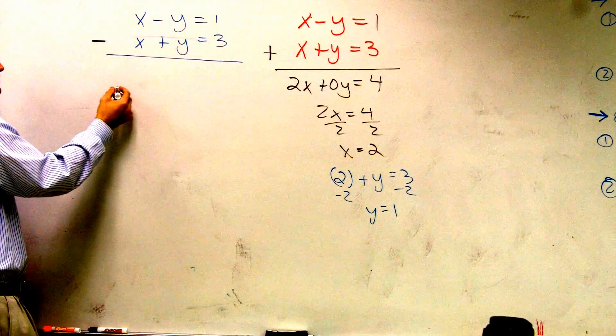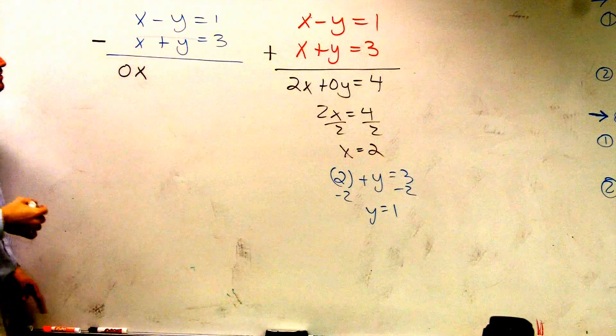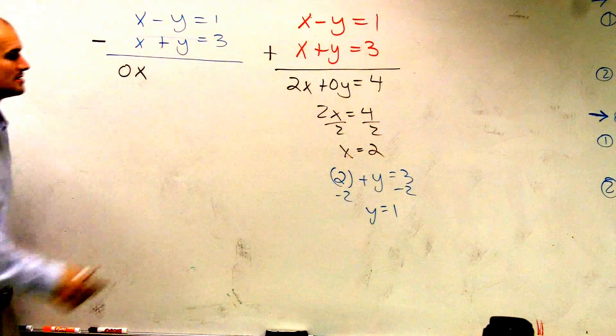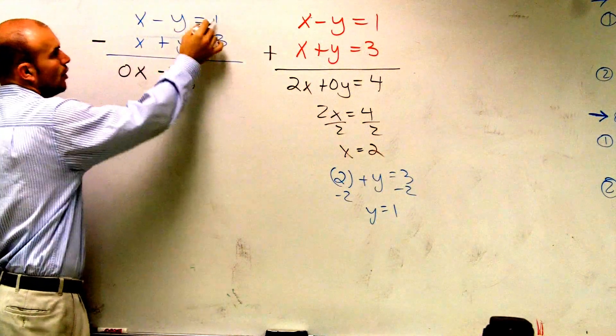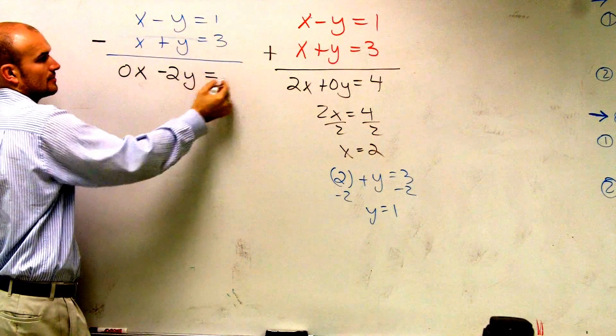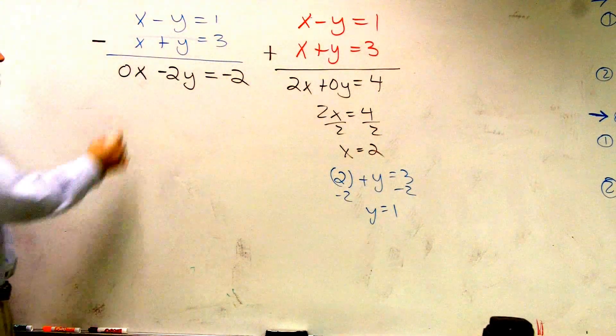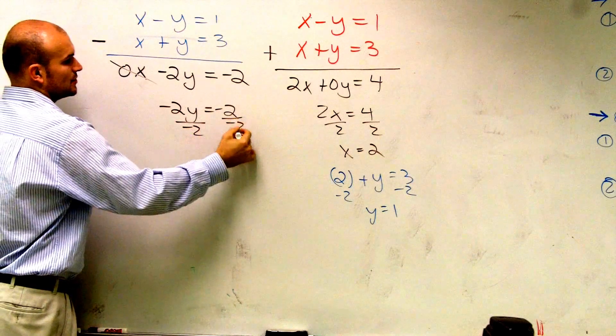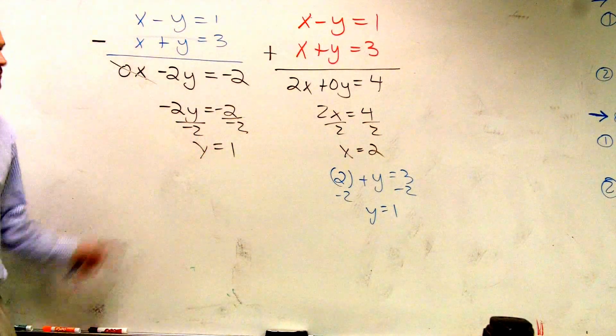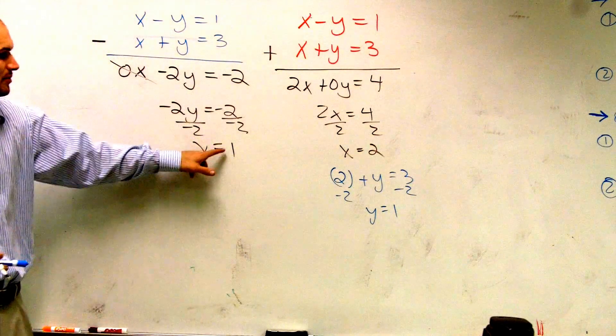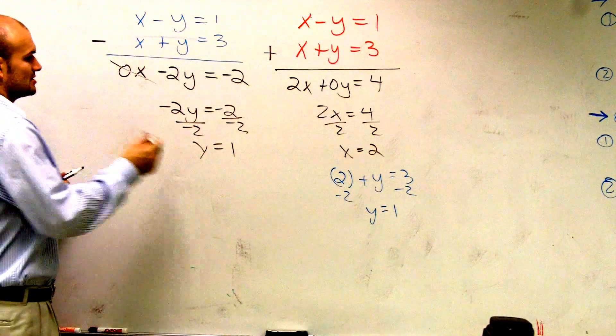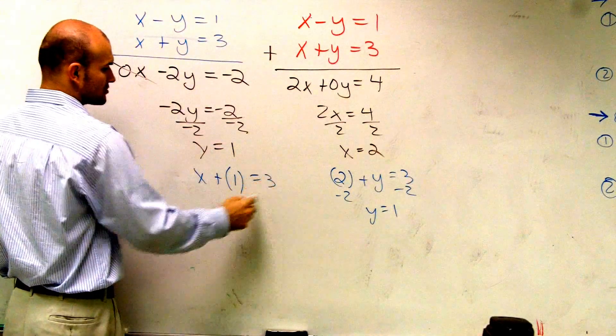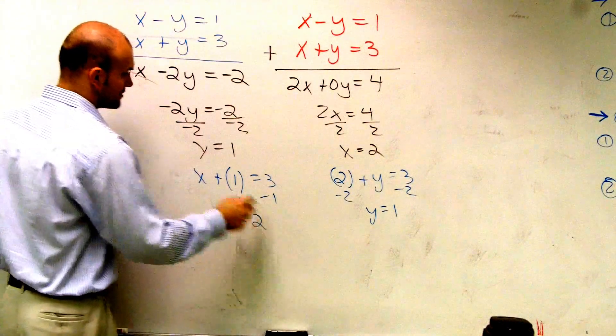x minus x is 0x. Negative y minus another y is negative 2y. 1 minus 3 is negative 2. That cancels out. Negative 2y equals negative 2. Divide by negative 2. y equals 1. Did y equal 1? Yes. Can we plug 1 back into our equation? Of course we can. So let's do x plus 1, because I'm going to plug the 1 in for that y, equals 3. Subtract 1, x equals 2.